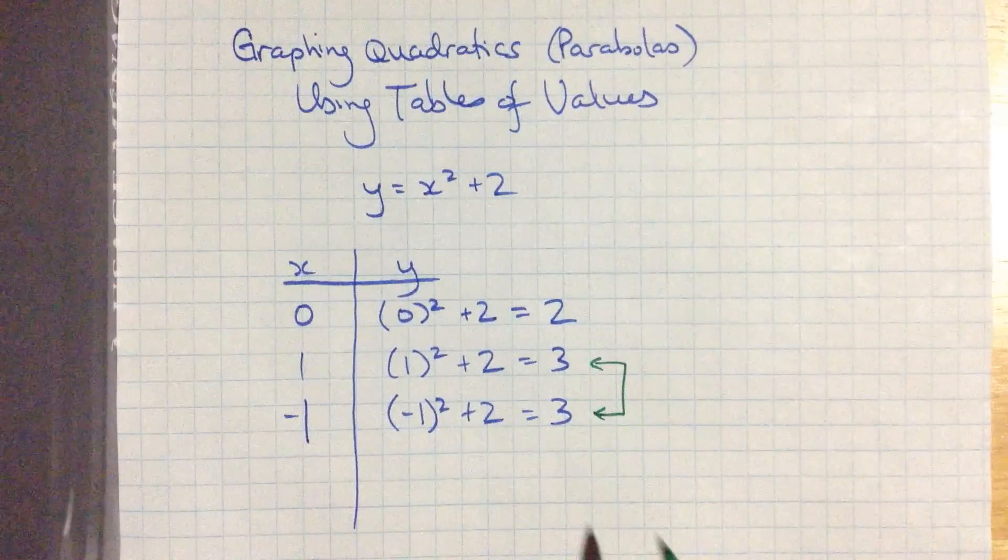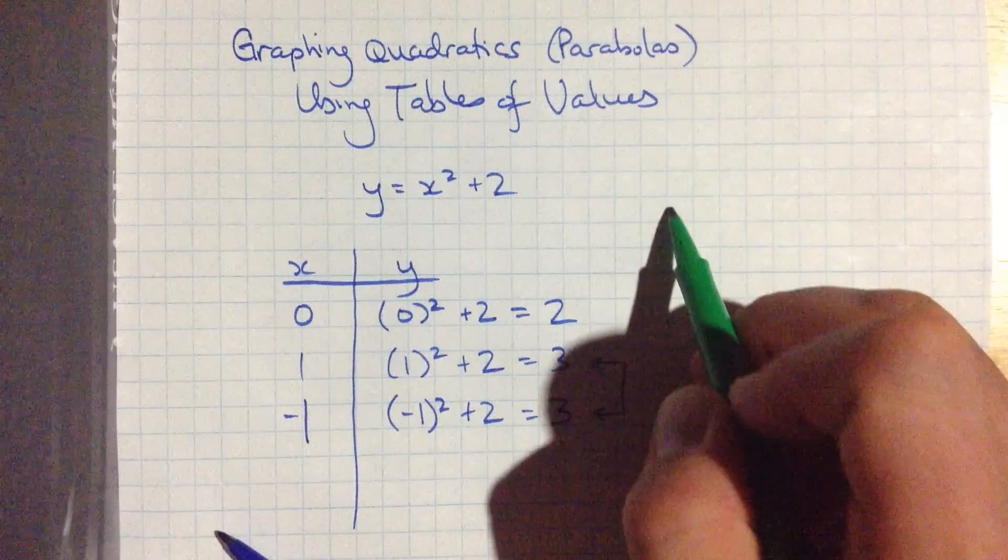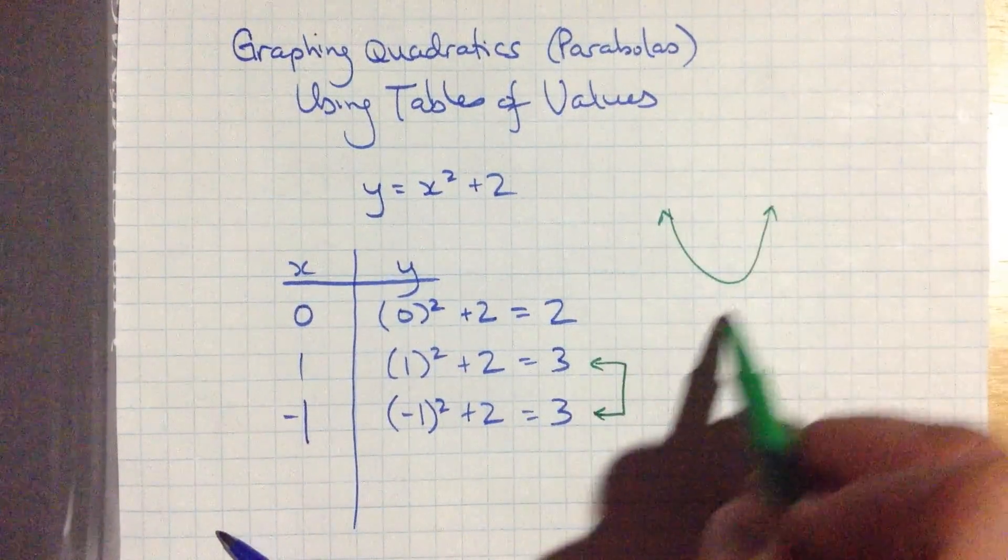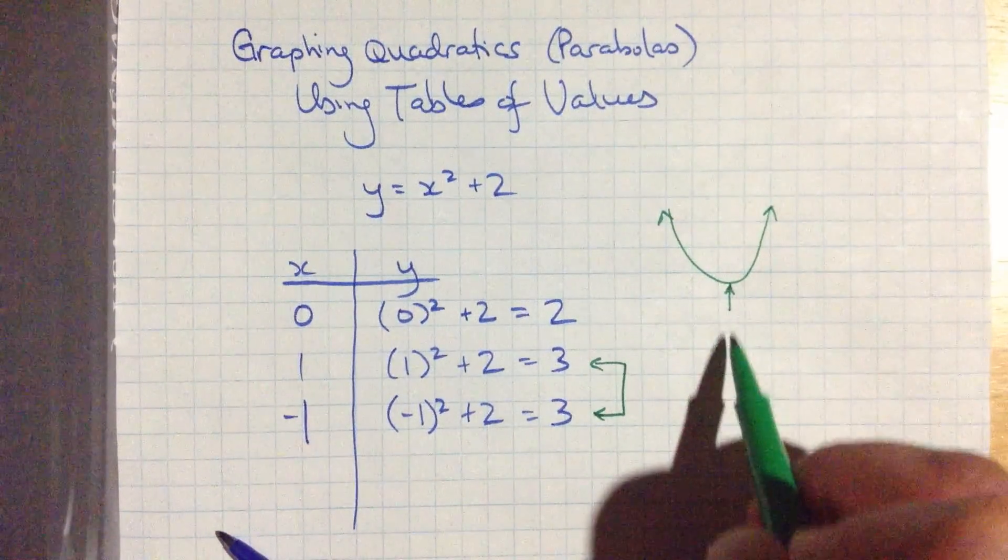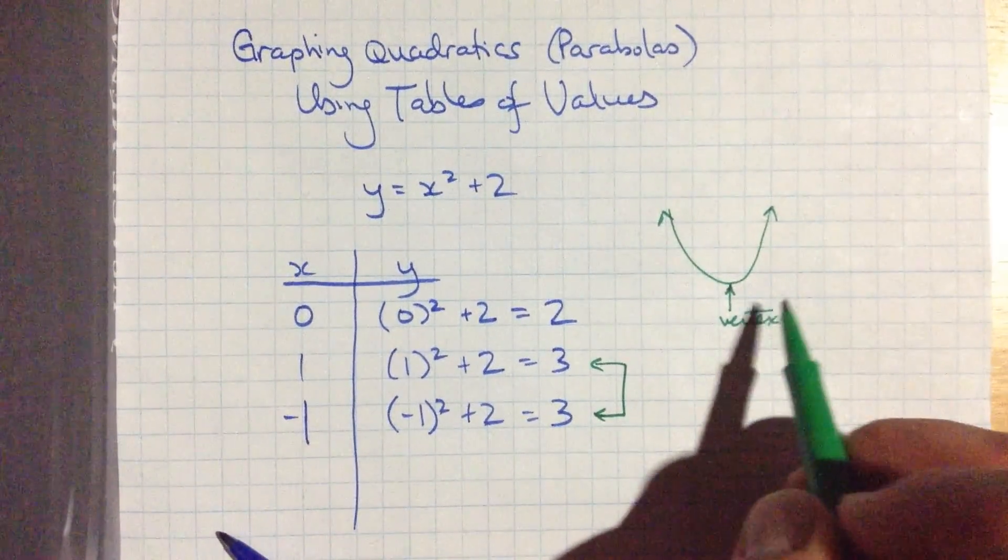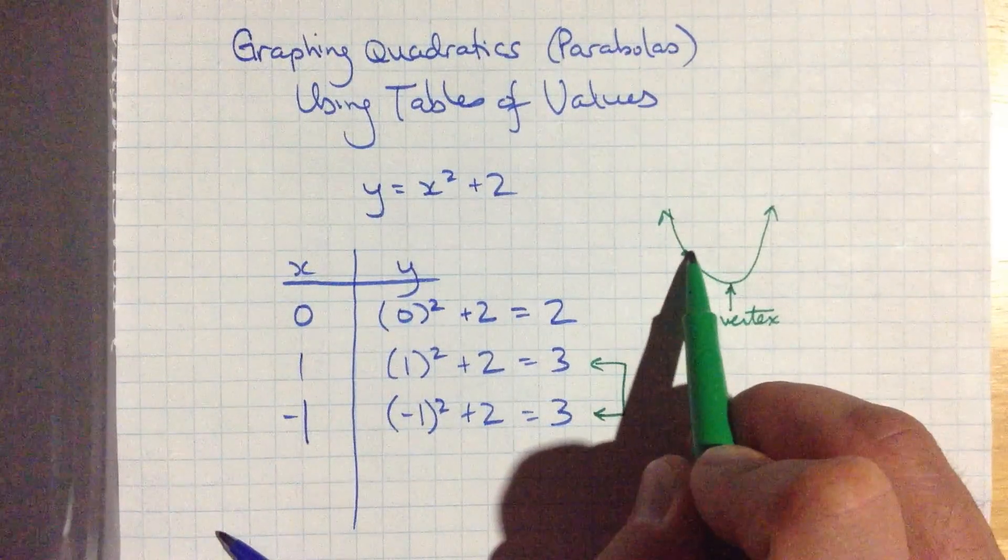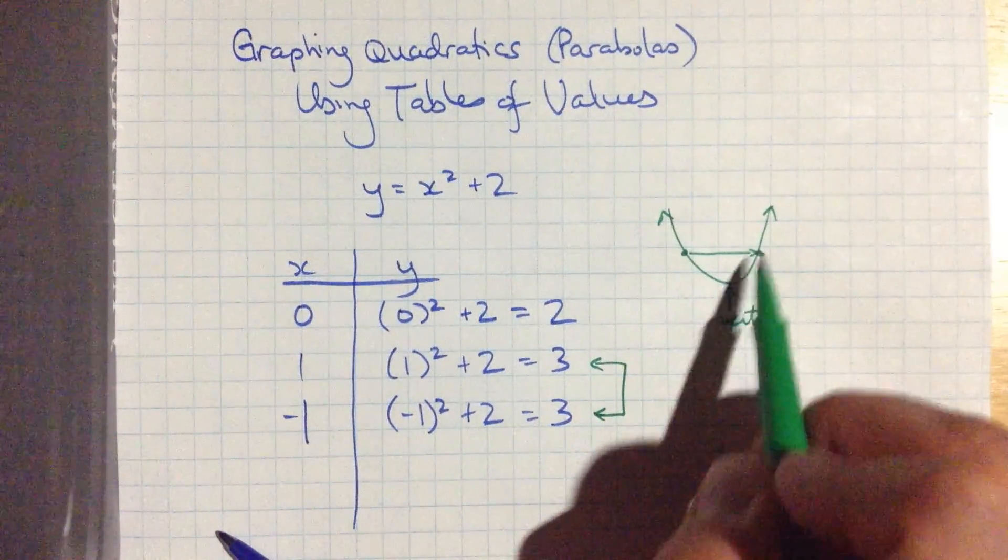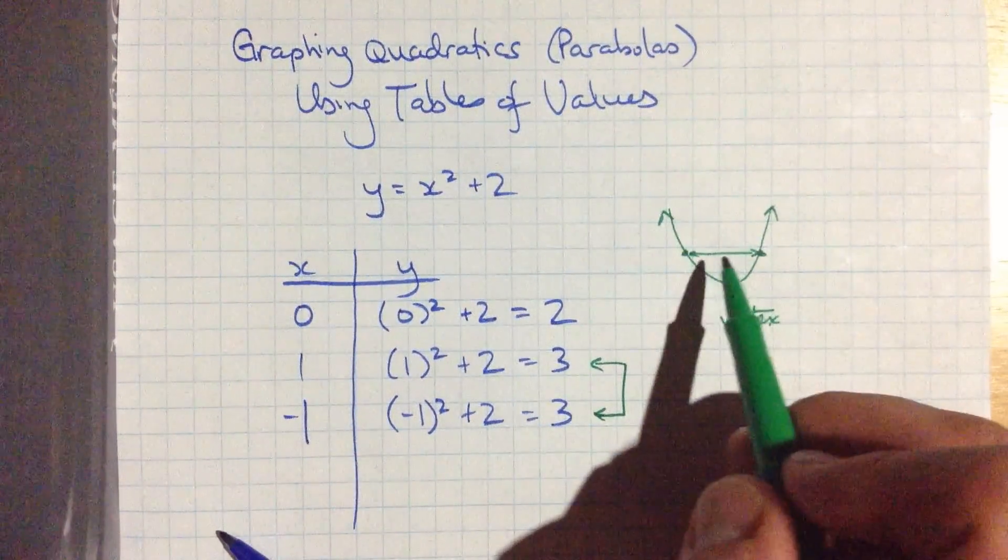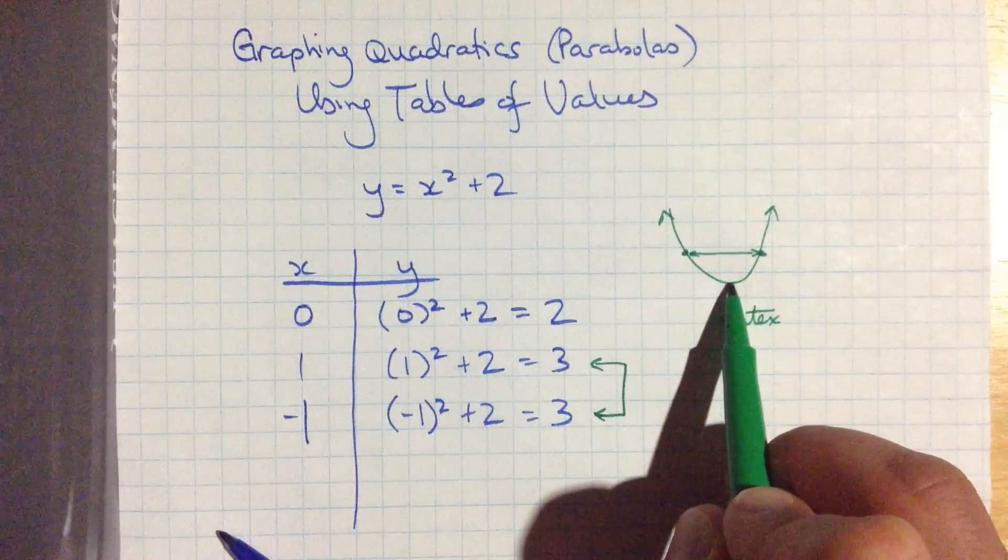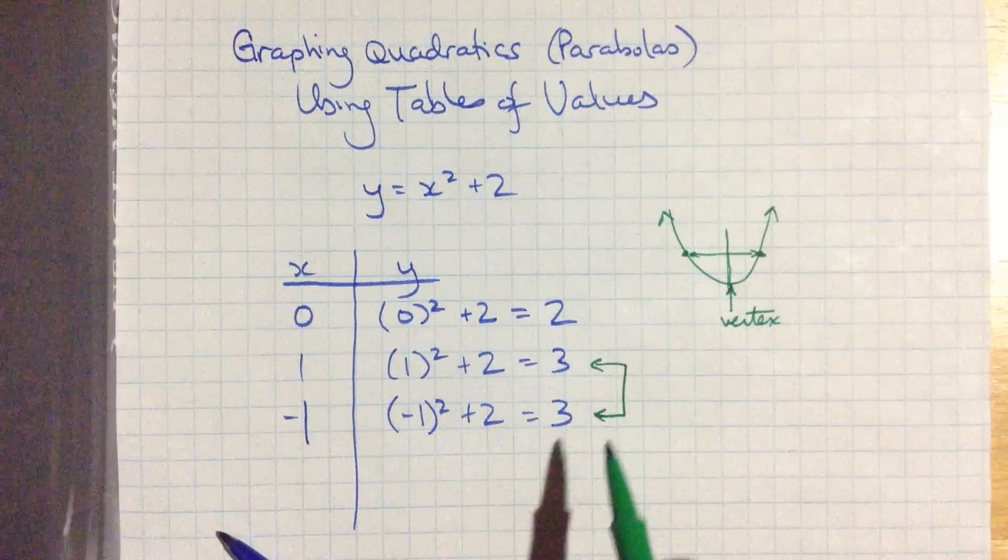that's an interesting clue. Parabolas have a nice u-shaped curve to them. They have this point at the bottom here that we call a vertex. And every point that you have has a corresponding point across over here, or the other way around. And it's always, the vertex is always exactly halfway between them.